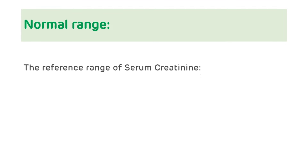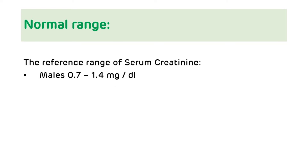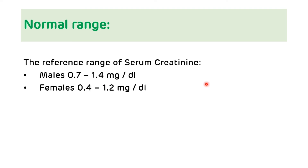Normal range of serum creatinine: the reference range for males is 0.7 to 1.4 mg/dL, and for females it is 0.4 to 1.2 mg/dL. The concentration of serum creatinine in males is higher compared to females because the level of serum creatinine depends on muscle mass, and muscle mass is greater in males.